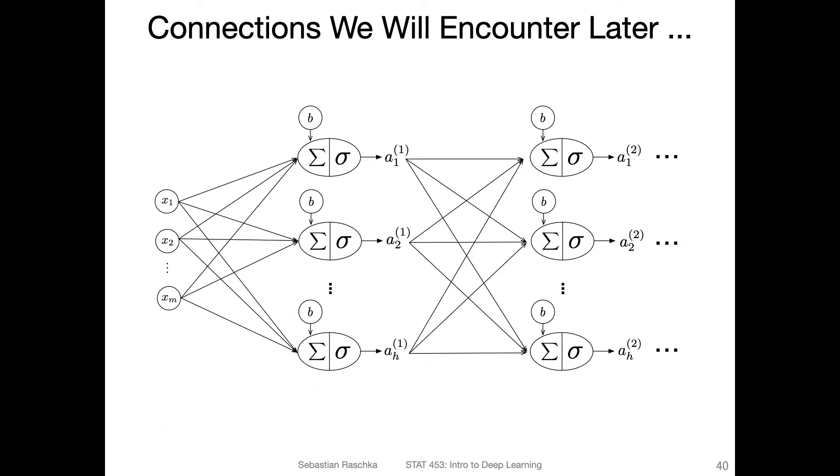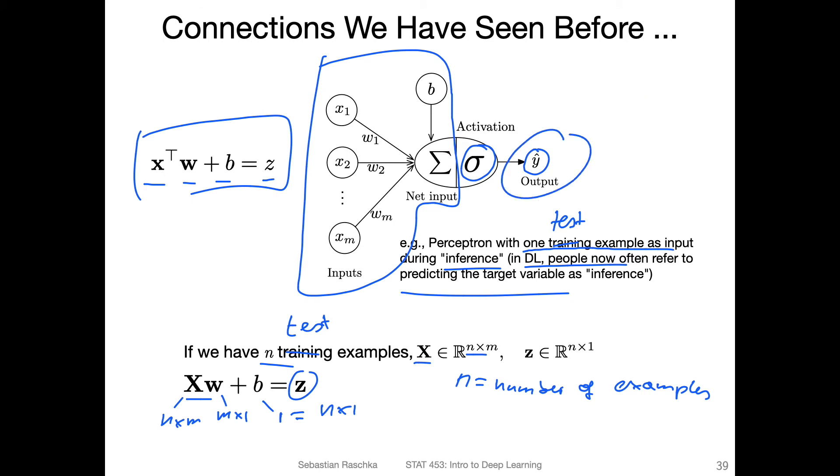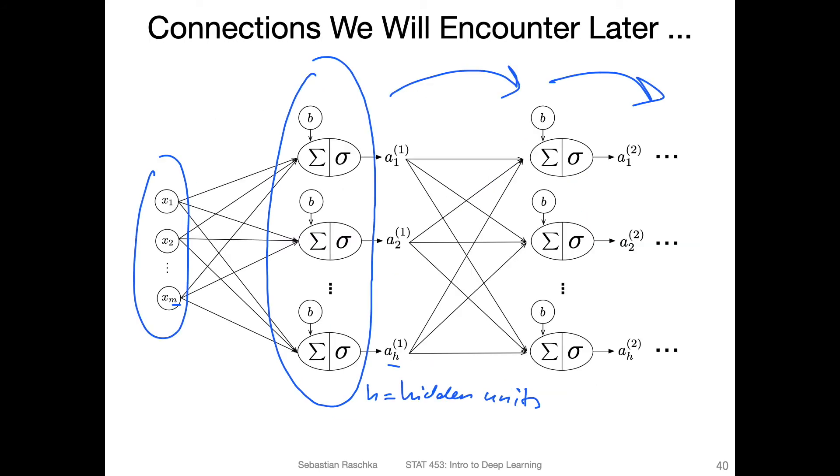Now, in deep learning, we usually have these neural networks with hidden layer representations. We will learn about that a little bit later in this course. So we have, let's say, one data point as input here, that's the feature vector, m features. And then we will have a number of outputs. So let's say h is the number of hidden units in a hidden layer. And then we have also multiple hidden layers. So we can have another hidden layer and another one and so forth. What I want to highlight here is that whereas in the perceptron we have a single output here, here we can have multiple outputs.